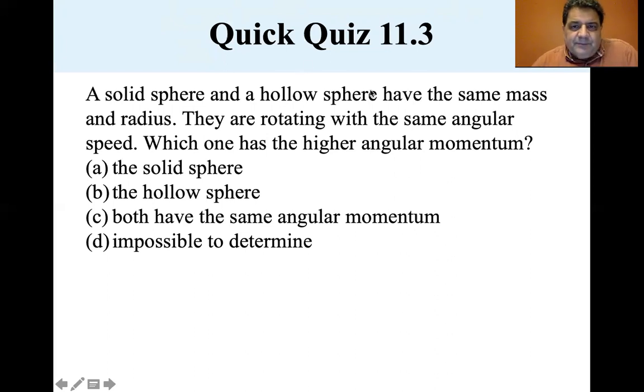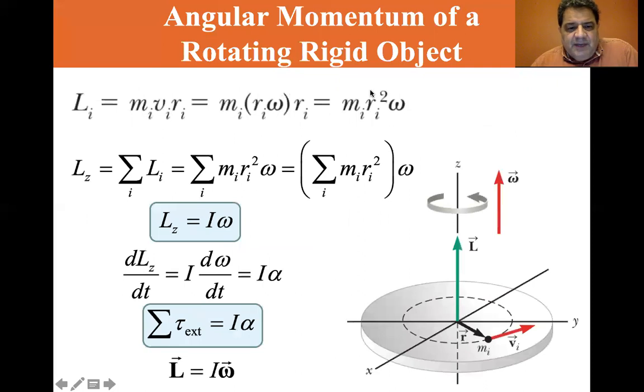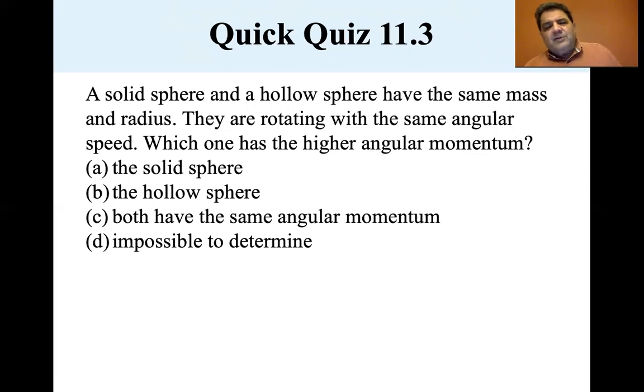Well, let's go back. Oh, I just gave it away. The hollow sphere, because it has a higher moment of inertia. The hollow sphere has a higher angular momentum.